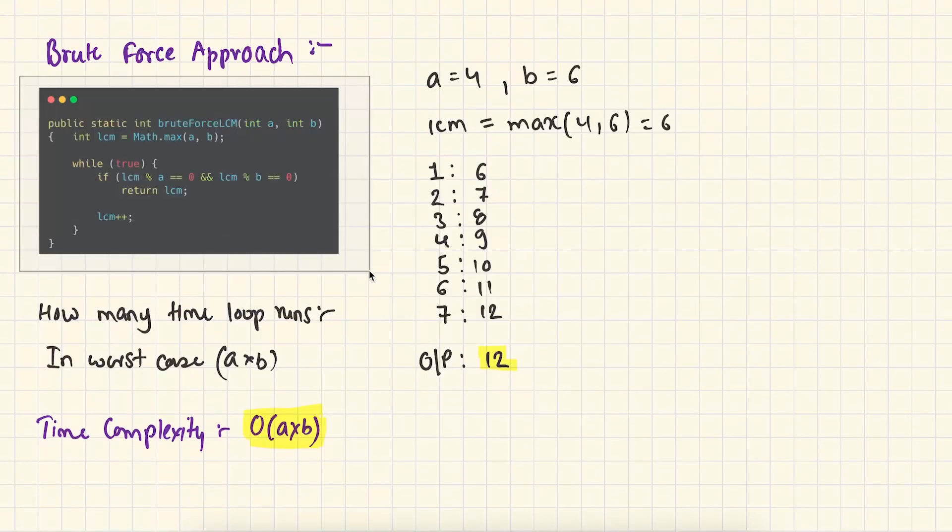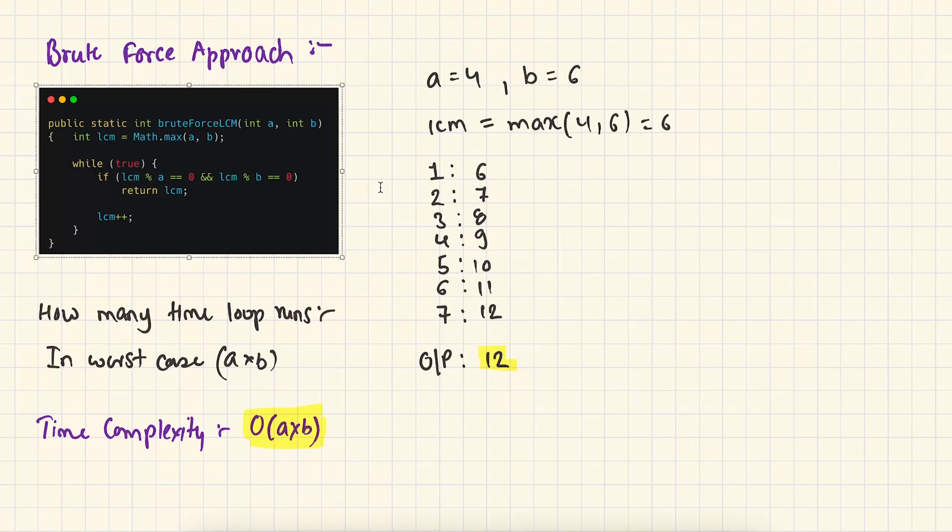On the left side you can see the brute force approach to solve this problem. Here we are first finding the maximum of two numbers and storing that value in LCM variable. Then we are running an infinite loop. In the infinite loop, we are checking if our LCM divides A or B or not. If LCM divides A and B, we simply return. Otherwise, we simply increment the value of LCM.